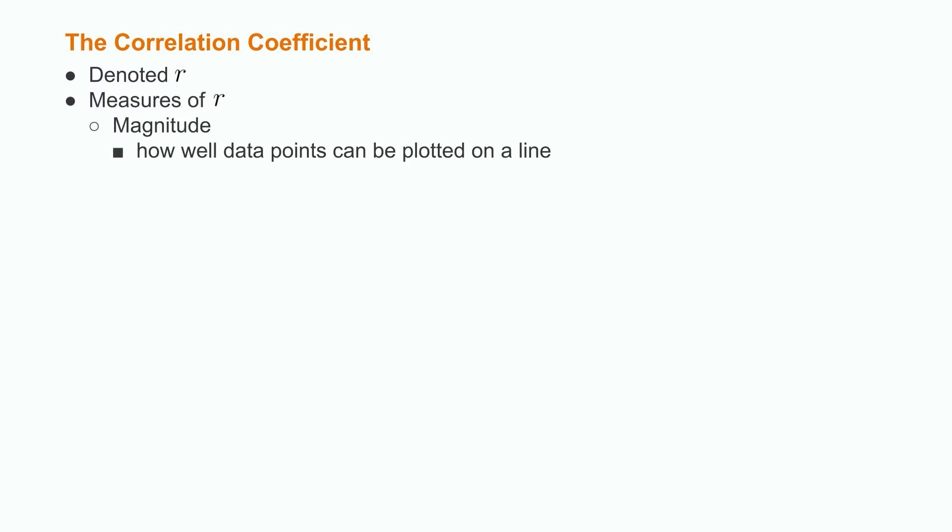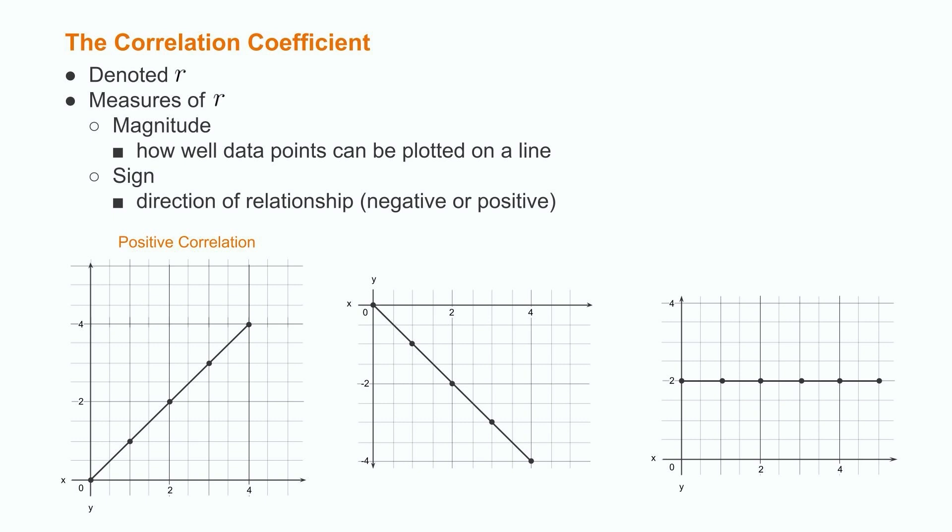The magnitude of a correlation coefficient describes how close the points are to a straight line when we plot the relationship on a graph. The sign of a correlation coefficient, either negative or positive, tells us if variables are negatively or positively correlated. The closer the value of r is to positive 1, the stronger the positive relationship. The closer the value of r is to negative 1, the stronger the negative relationship. If a correlation coefficient is 0, it means that two variables are unrelated and form a horizontal line when plotted on the chart.